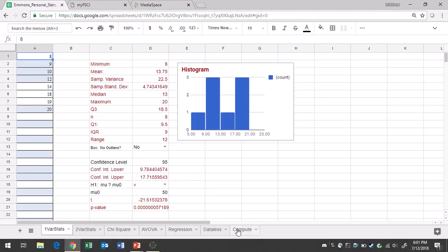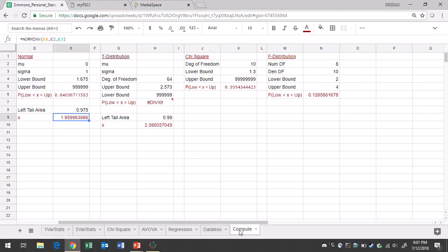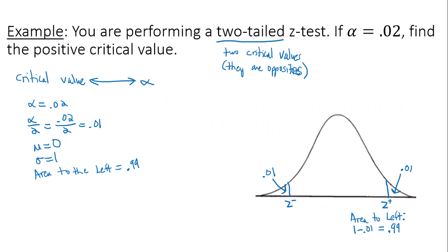In Google Sheets, you'll go to the Compute tab. We're still dealing with the normal area here, or normal region. The mean is still 0, standard deviation is 1, and the left tail area is actually 0.99. That is the area to the left of the data value or critical value I'm trying to find. I get about 2.33. So my positive critical value is 2.33.